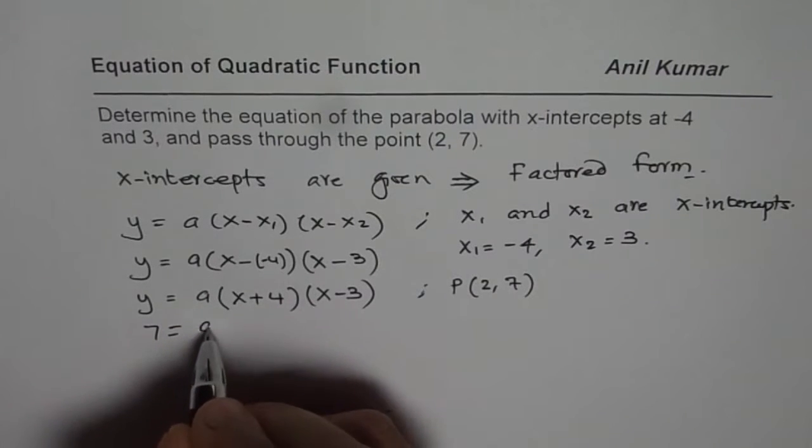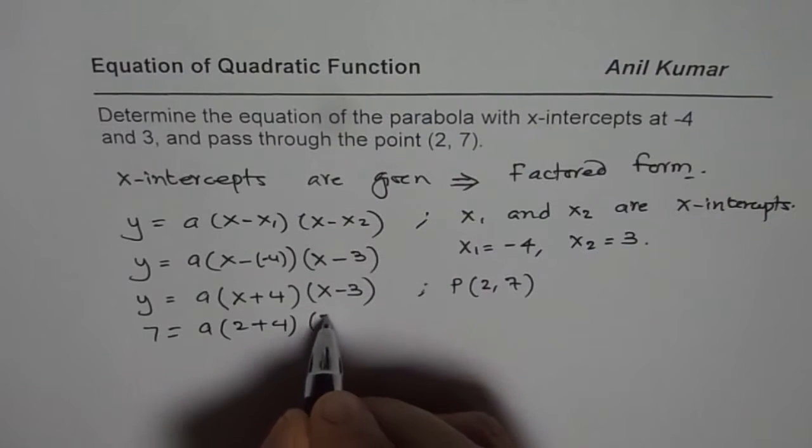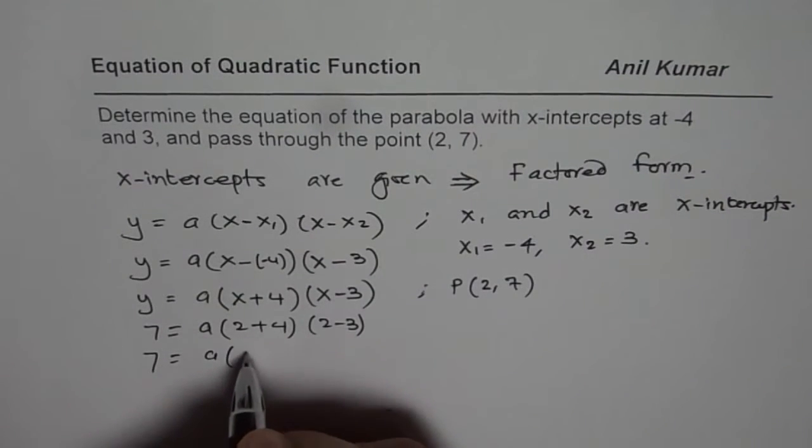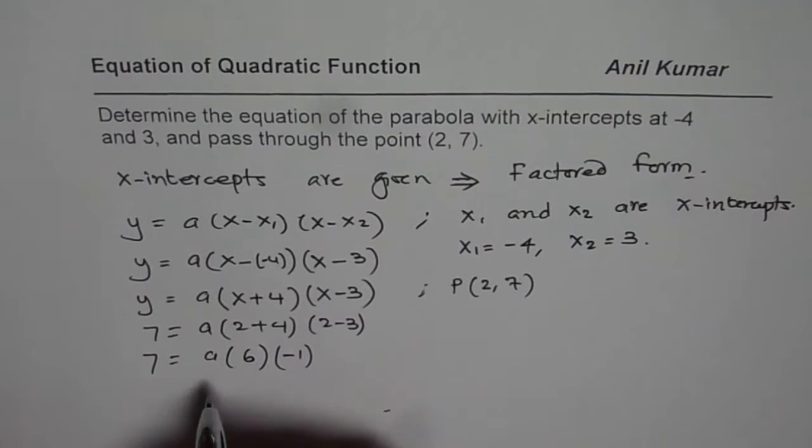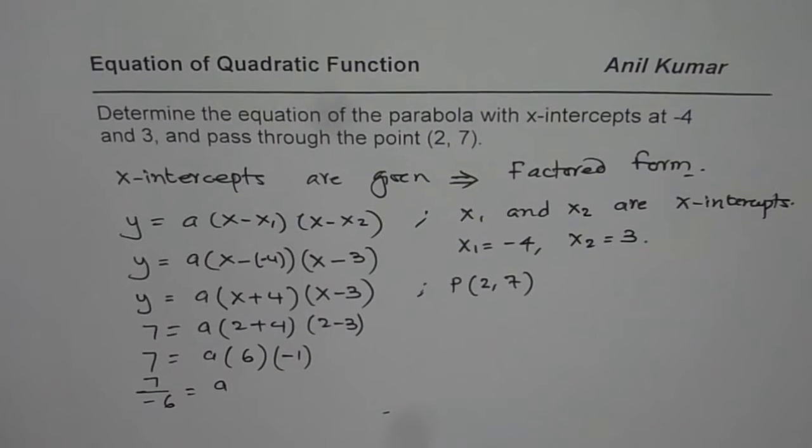So, we will write 7 for y, 2 for x, 2 plus 4 times 2 minus 3. 7 equals A times 6 and 2 minus 3 is minus 1. So, from here, we get A equals 7 divided by minus 6. So, that is how you get the value of A.